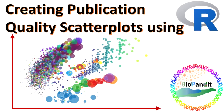Hello and welcome to the biostatistics section of Biopandit. This is Saurav, your very own Mahapandit, and in this video I am going to show you how to generate publication quality scatter plots using command line R and without command line OriginLab software.